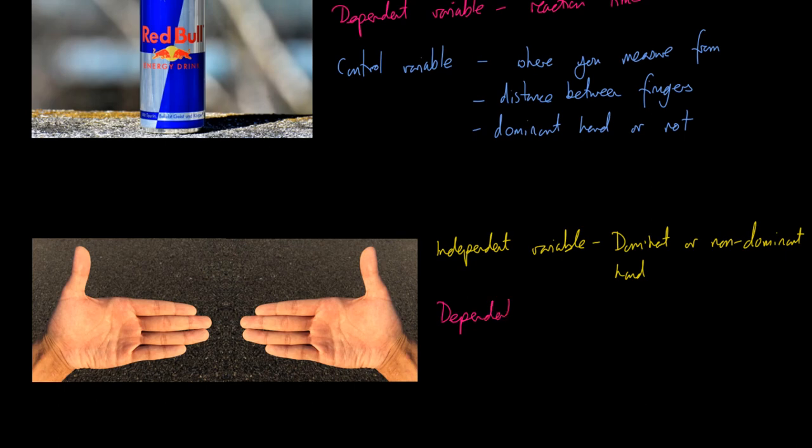The dependent variable in this case would still be reaction time, so you've converted that distance the ruler has fallen into a time by using a conversion chart. Your control variables are going to look very much the same as the previous one. You're talking about finger distance, you're talking about measurement.